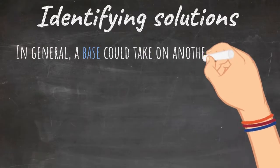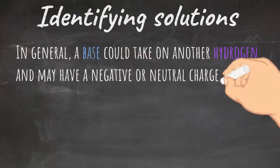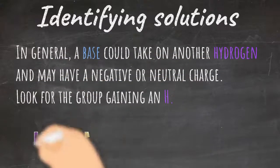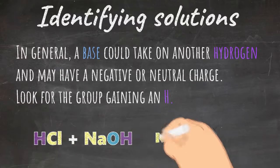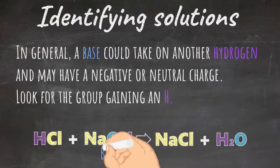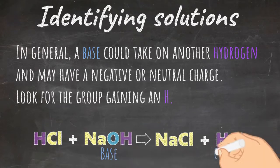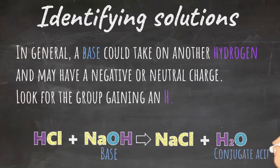You can identify a base because it can take on another hydrogen and may have a negative or neutral charge. When looking at a reaction, if the group gains a hydrogen, then it is a base to acid reaction. Below, you can see NaOH is the base, and H2O is a conjugate acid.